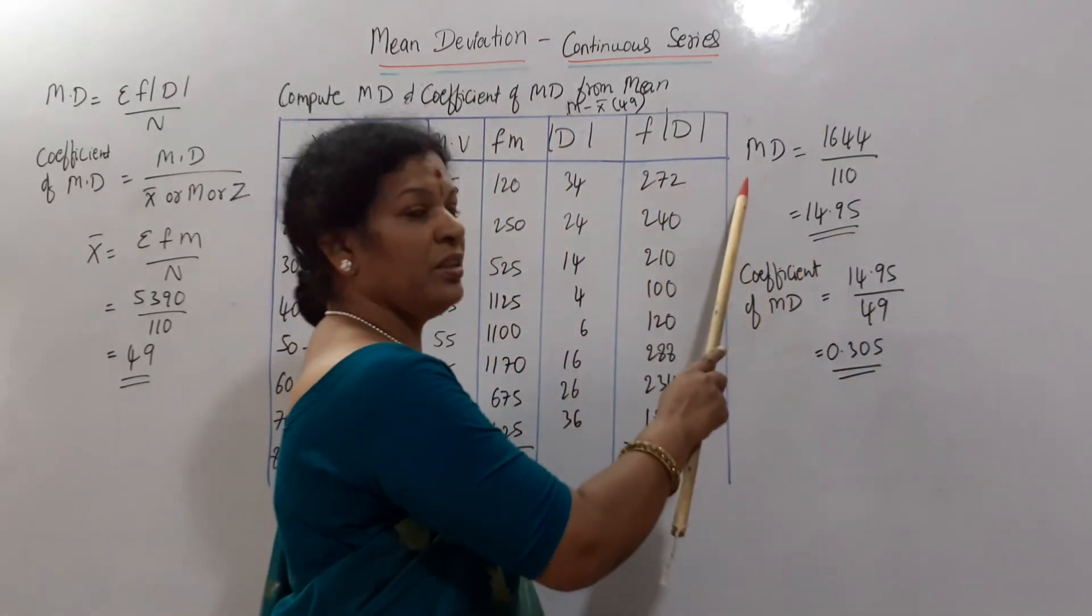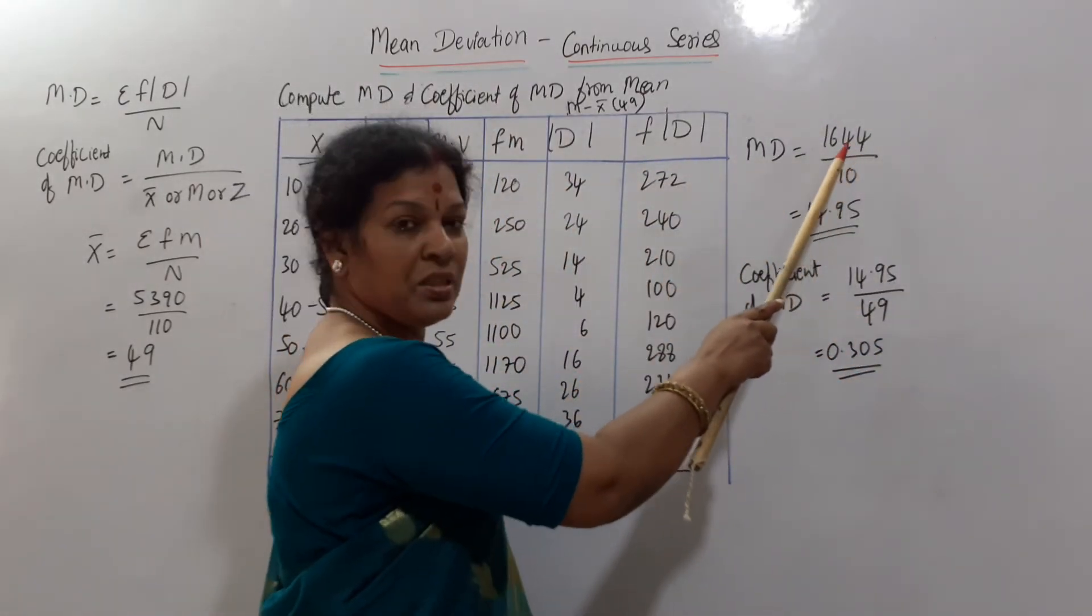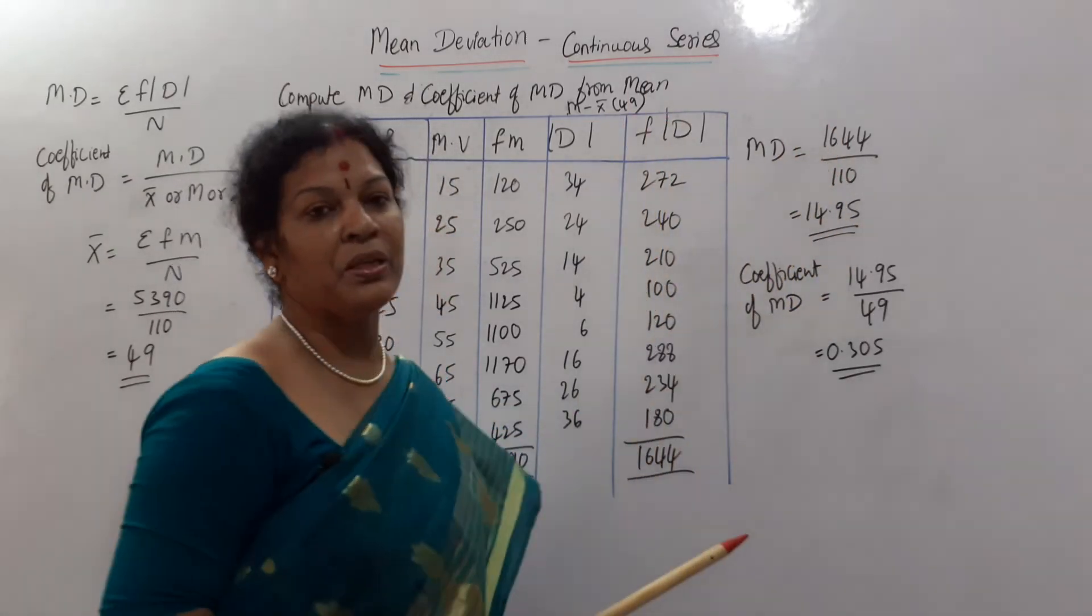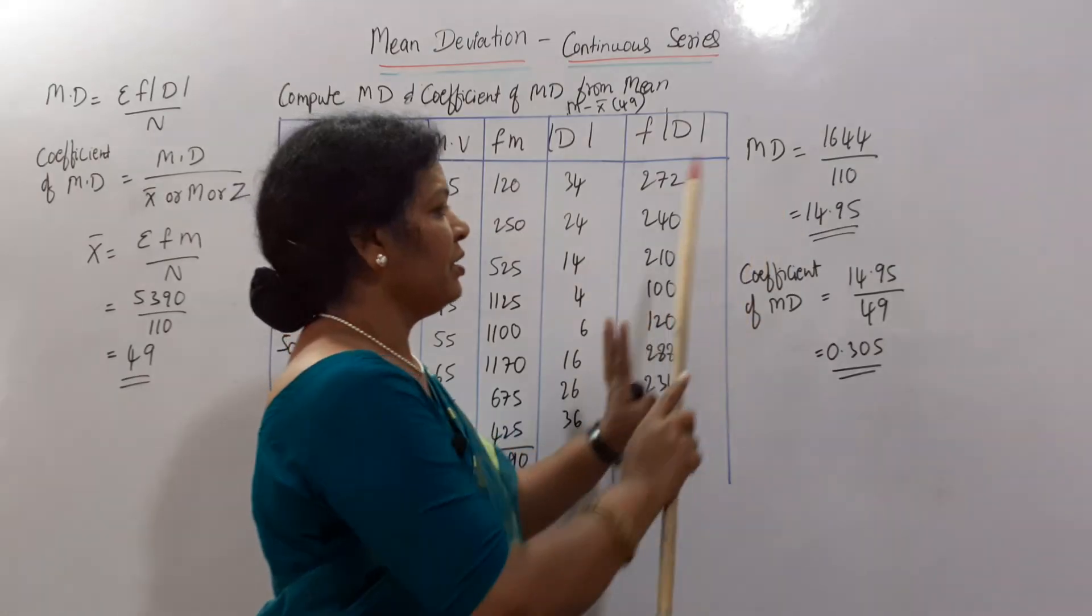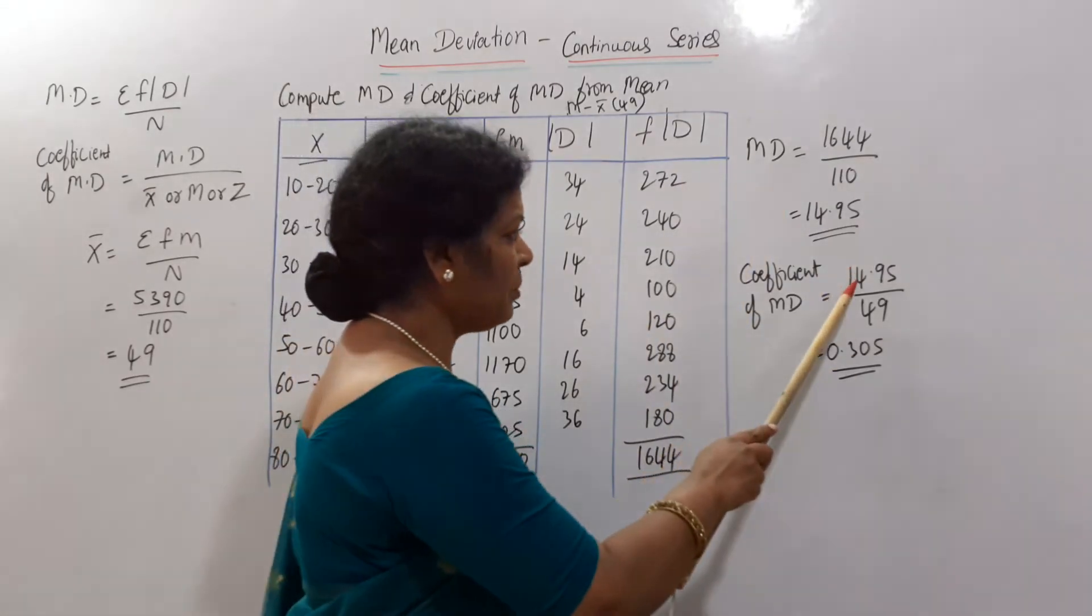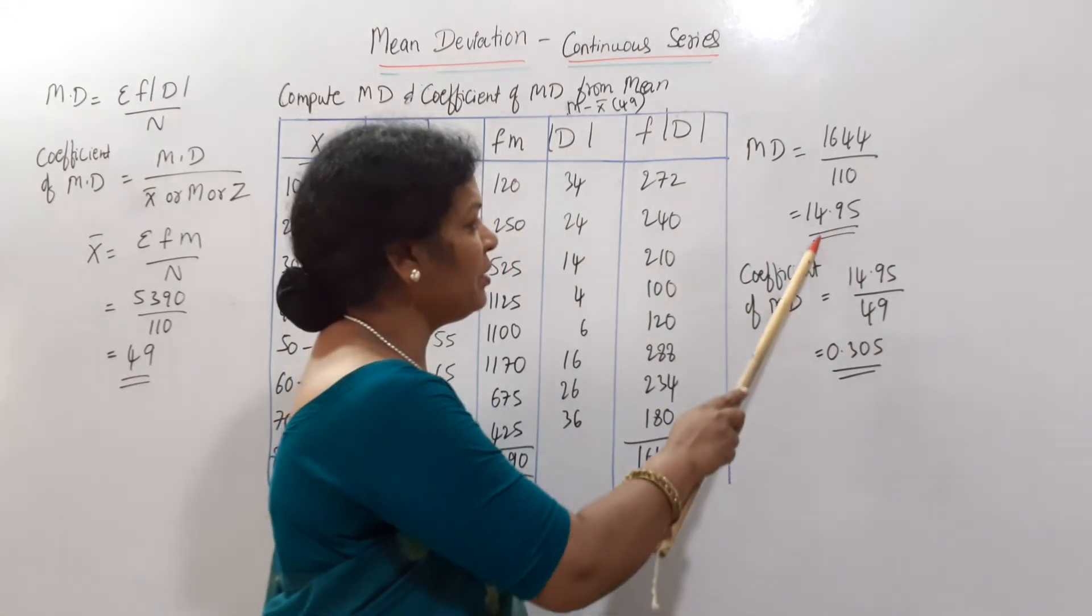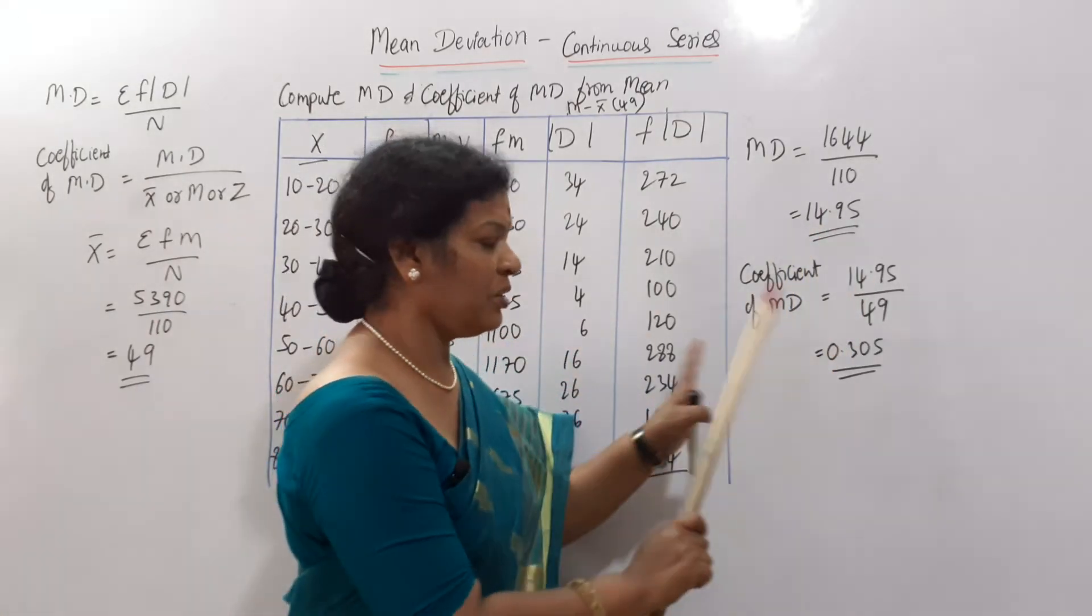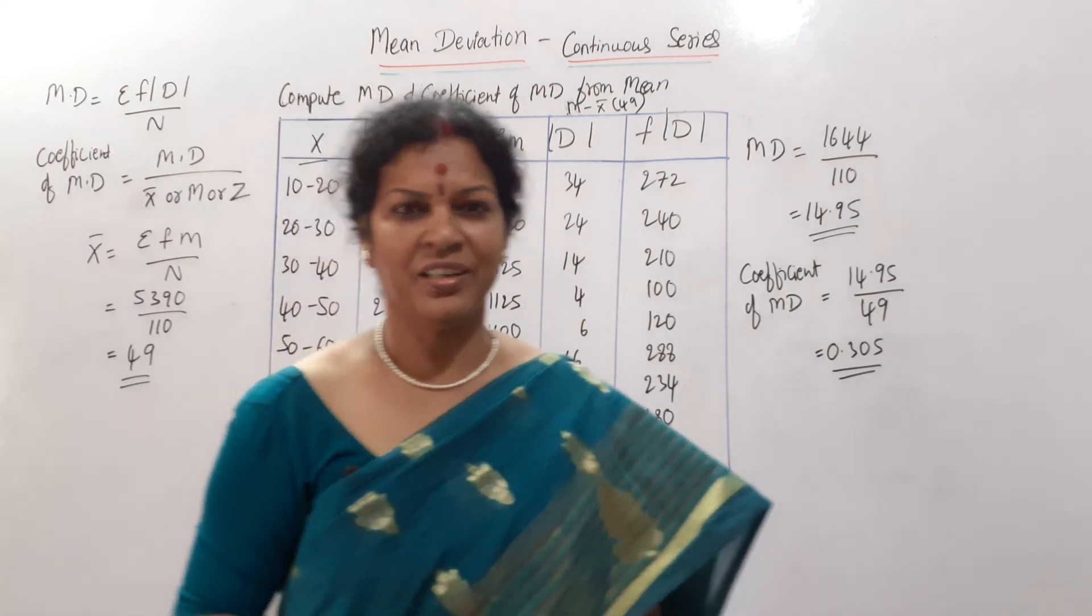Mean deviation is equal to sigma f into mod d. This one divided by frequency total. Coefficient of mean deviation, mean deviation by x bar. Mean deviation is this one. X bar is, we know we have calculated 49. So this you got it. Clear continuous series. Want to take screenshot?